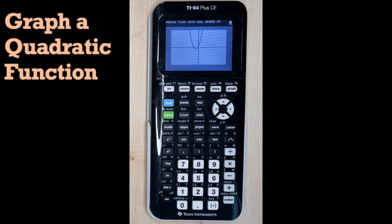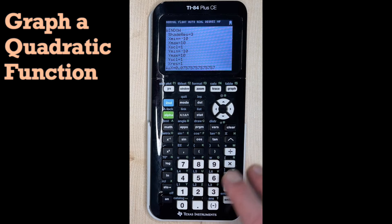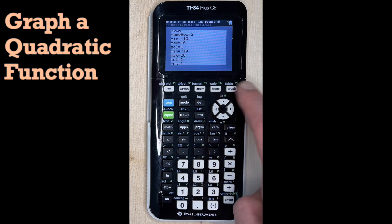But if we wanted to see it a little bit higher, we're adjusting our window. We can hit the Window button, and if we want to see it a little bit higher, we can adjust Y max. Let's maybe change it to 20 and then hit graph. Now we can see a little bit more about what our parabola is doing.